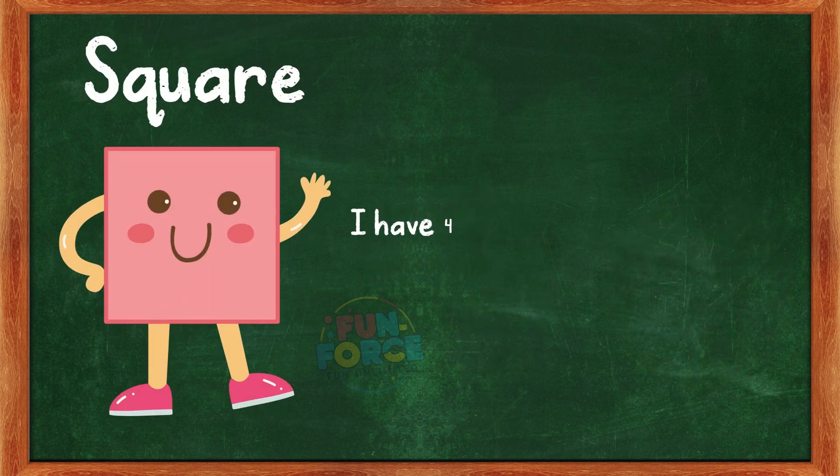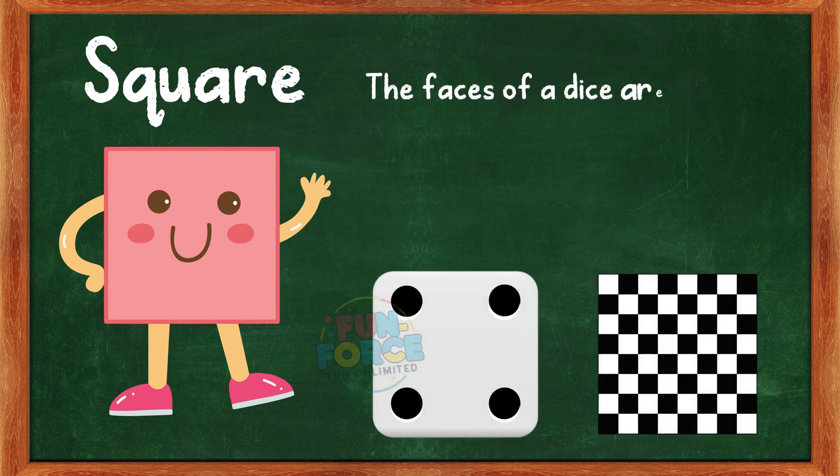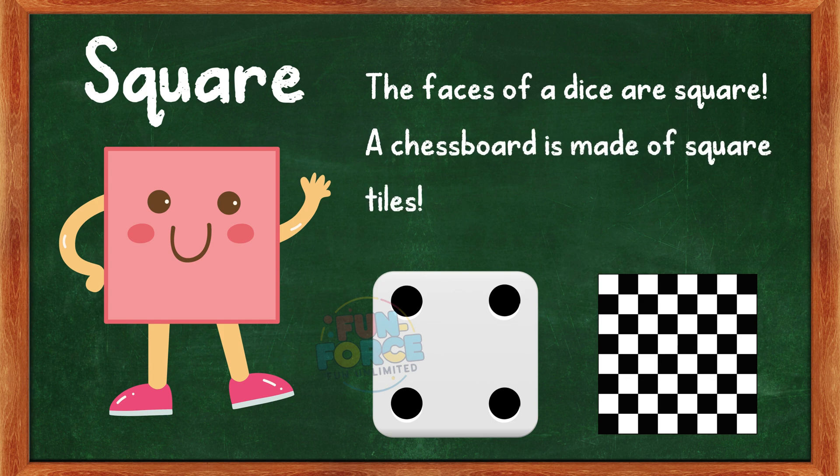I am a square. I have four equal sides and four corners. Can you guess some objects that are square shaped? The faces of a dice are square. A chessboard is made of square tiles.